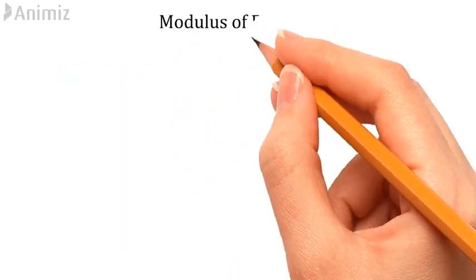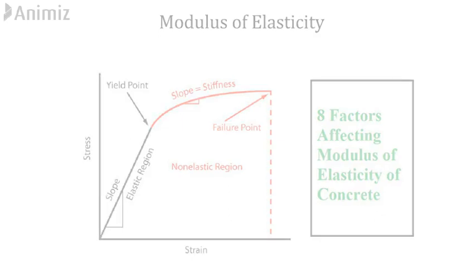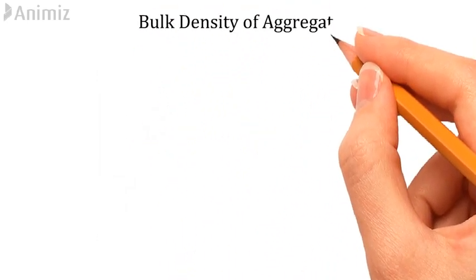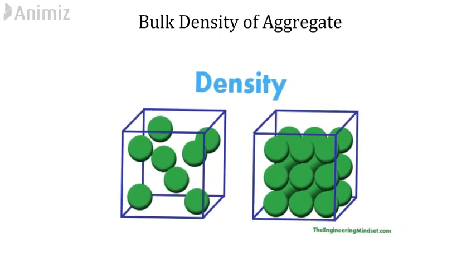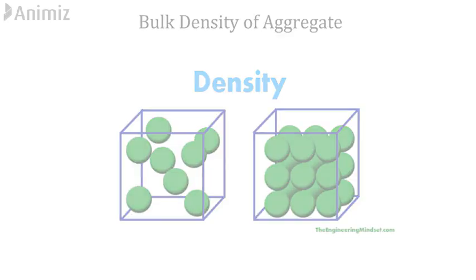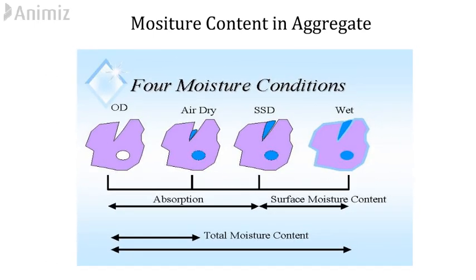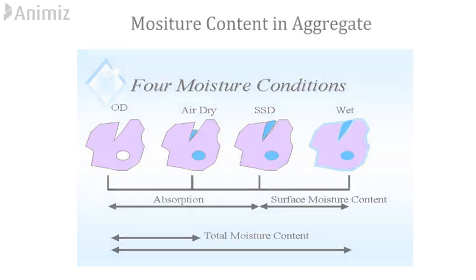We will also aim to understand the modulus of elasticity and the factors affecting the modulus of elasticity of concrete. Then we will cover the introduction of density of aggregate and understand why this information is so important, followed by moisture content in aggregate and the importance of this topic while practicing civil engineering at site.